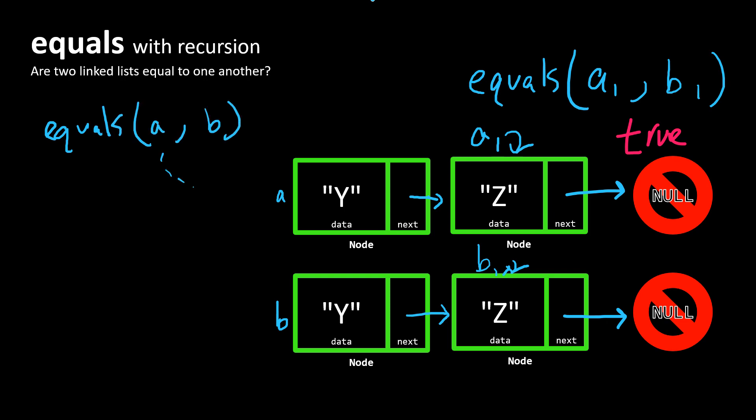And remember, A is referring to this node here and B is referring to this node here. So these are the head nodes of these two lists.